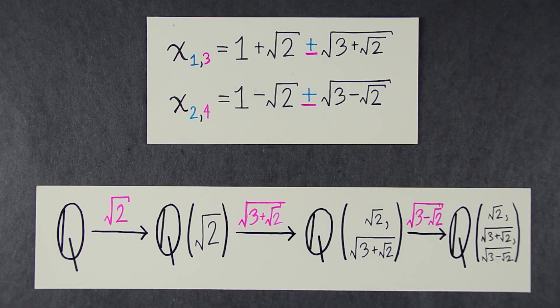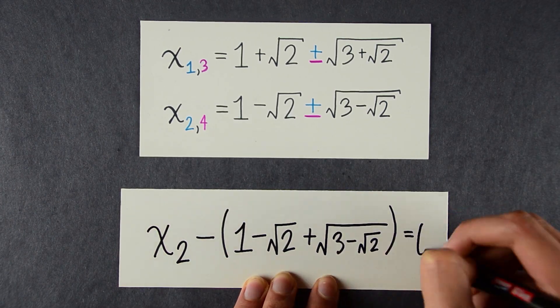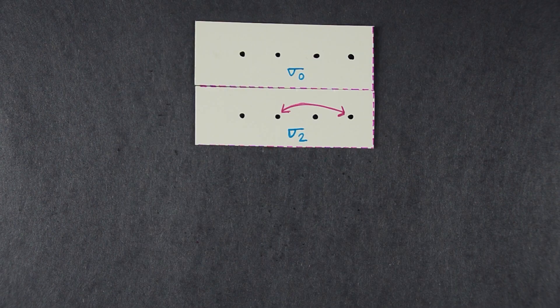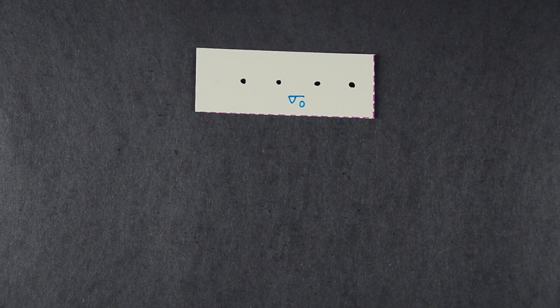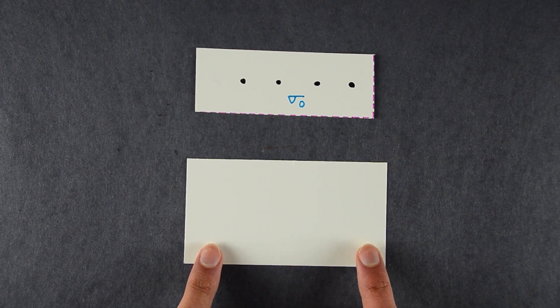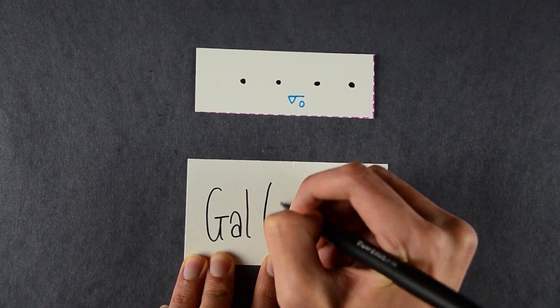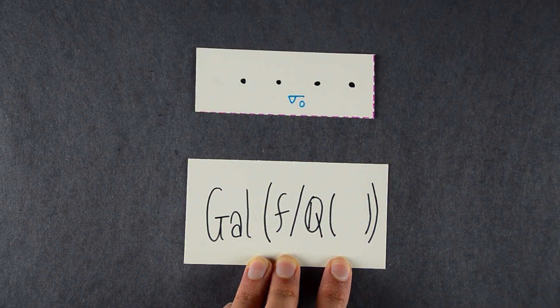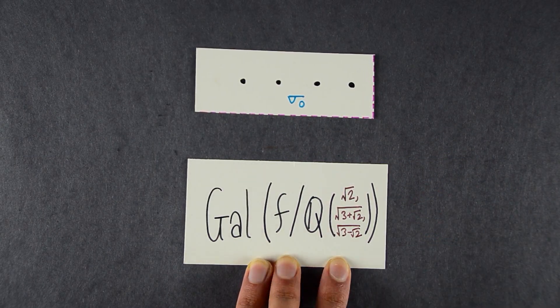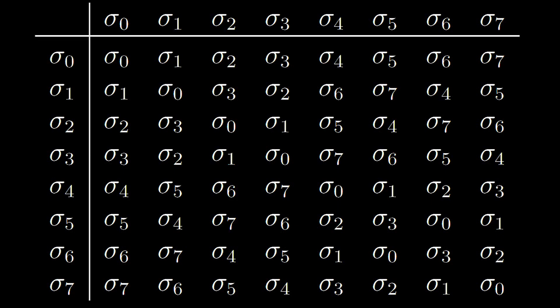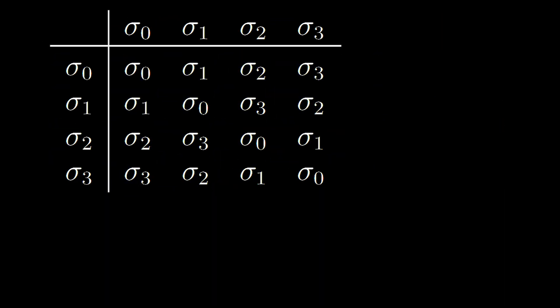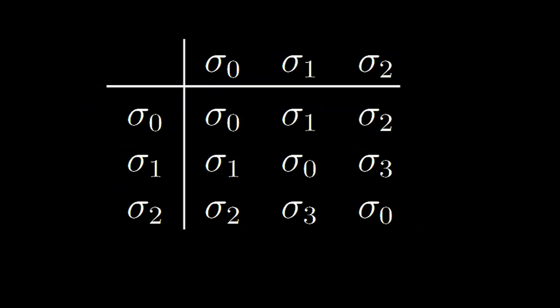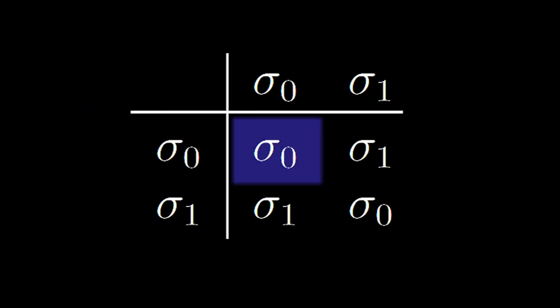Now we'll extend the field one last time by adding in this element. Then we get this new equation. Now there's only one permutation of the roots that leaves all the equations unchanged, and it's the do-nothing permutation. This is called the Galois group of f over the field Q adjoined root 2, root 3 plus root 2, root 3 minus root 2. In the group table, we started here, then got to here, then here, and then just one element.